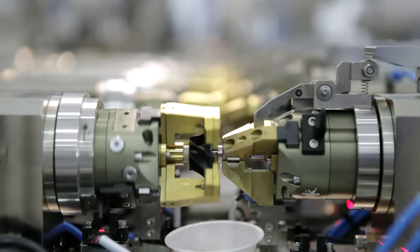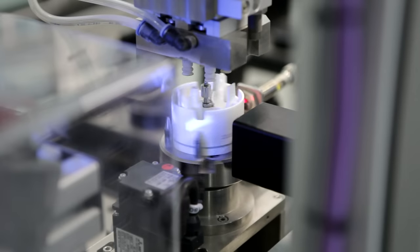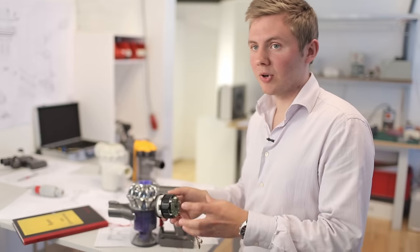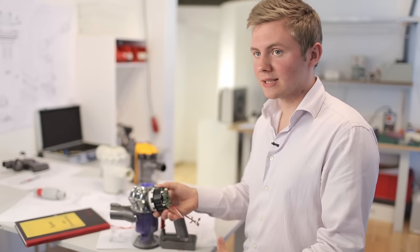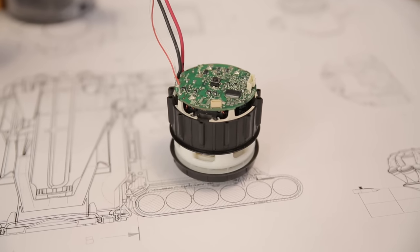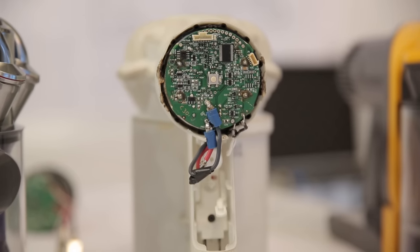In previous machines we've used a V2 motor. We had several different electrical boards controlling different areas of the product. On the V6 motor we've managed to combine all of these ancillaries into one board at the back of the motor itself, and that's made the whole unit far more compact.